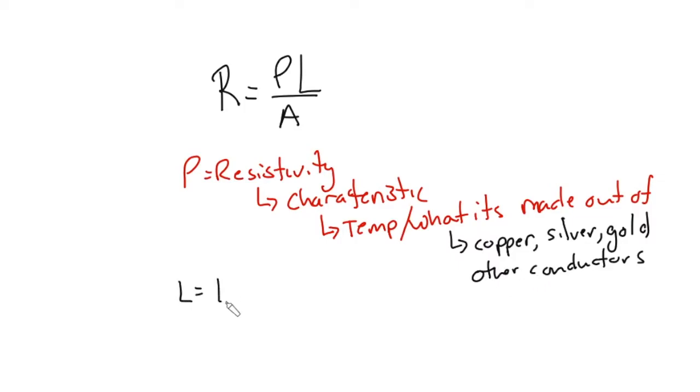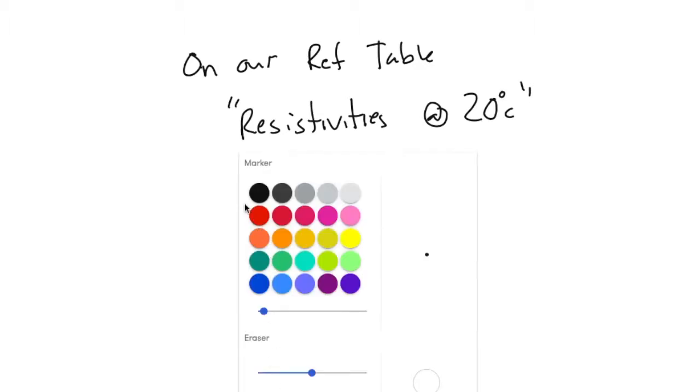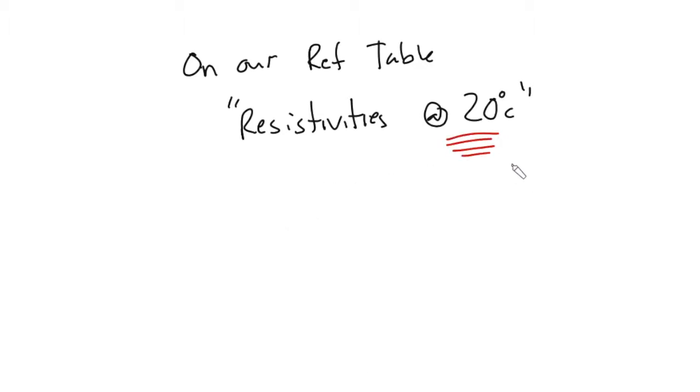L is equal to the length of the wire. A is equal to the cross sectional area. Now oftentimes on our reference table, you will see a chart that says resistivities at 20 degrees Celsius. So when you see this 20 degrees Celsius, we know to look on the reference table. And the other thing we need to know is that as temperature goes up, then resistivity also goes up. So we have right now R equals V over I, and we have R equals rho L over A.